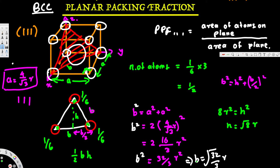Now we have both the base and the height, so we can calculate the area of the triangular plane. Area = (1/2) × base × height = (1/2) × √(32/3)·R × √8·R. Calculating this gives: Area = 8/√3 · R².